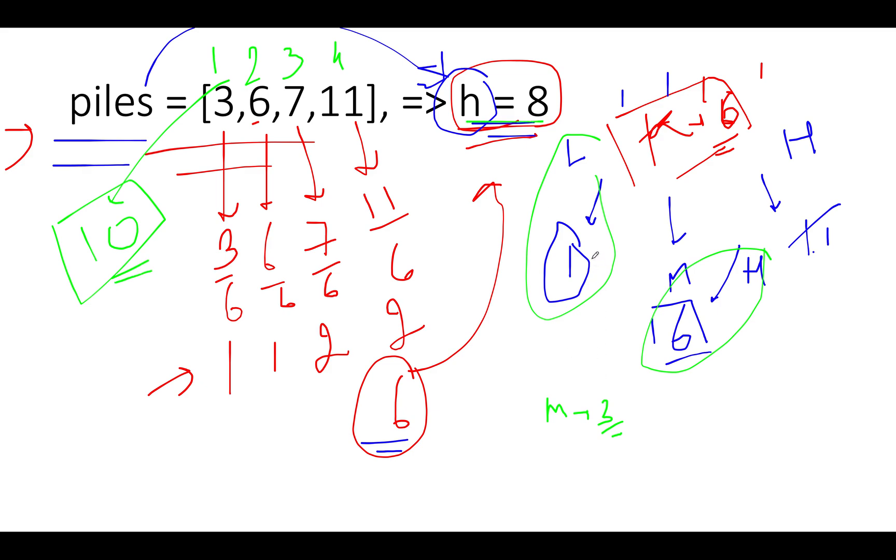Now we have low pointing to 4 and high pointing to 6. Let's calculate the middle pointer. The middle turns out to be 5, and let's proceed with the same calculation of hours to eat the entire piles. 3 by 5 gives me 1 plus 6 by 5 gives me 2 plus 7 by 5 gives me 2 plus 11 by 5 gives me 3. So what is the total sum? Total sum turns out to be 2 plus 2 is 5, 5 plus 2 is 7, 7 plus 1 is 8. So it is within the range. H is equal, it is equal to the value of h that we have.